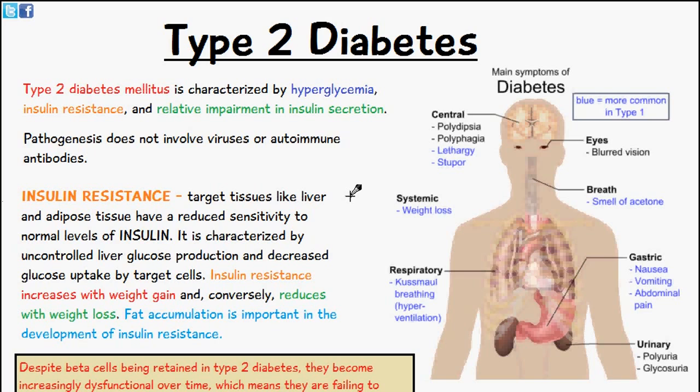Welcome to 5-Minute School and in today's video we're going to be talking about type 2 diabetes mellitus. It's characterized by hyperglycemia, insulin resistance and the relative impairment in insulin secretion. The main symptoms of diabetes I've included on the right here in this diagram — the ones in blue are more common in type 1 diabetes.